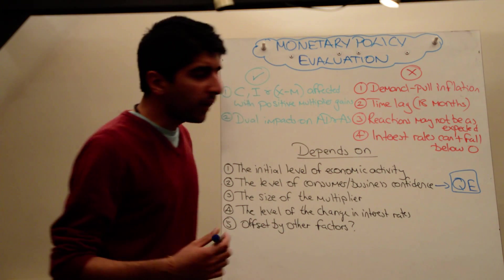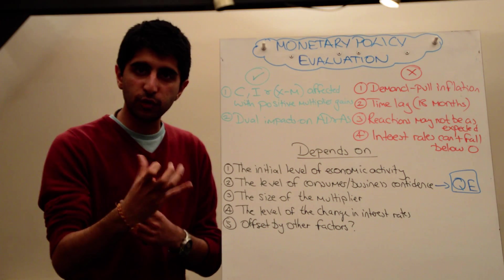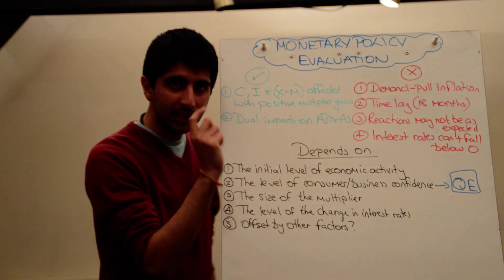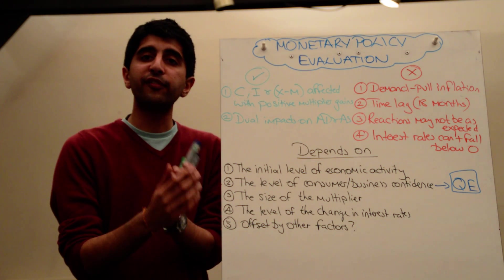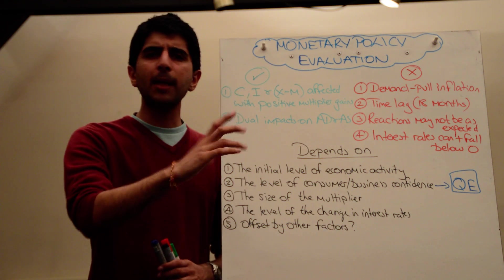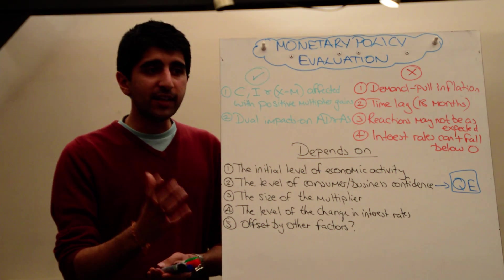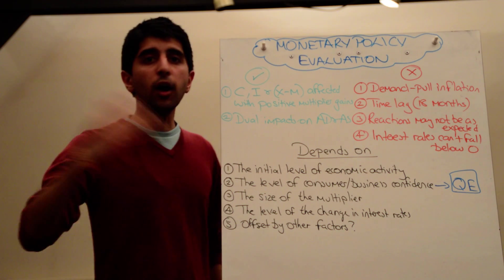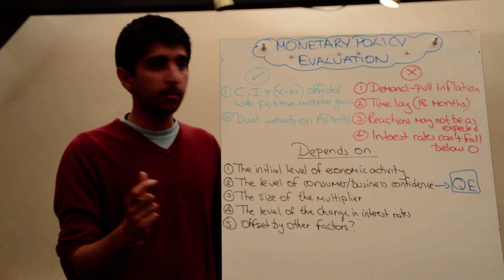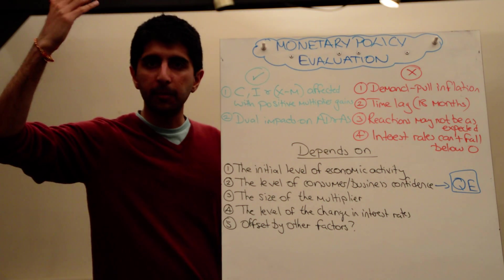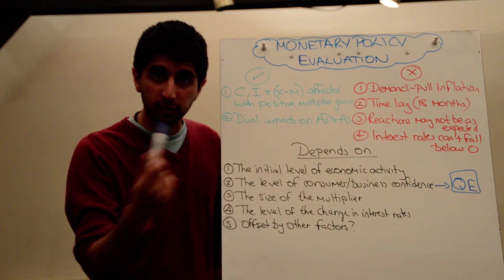And overall, whether expansionary monetary policy actually works in stimulating aggregate demand and stimulating growth and reducing unemployment, depends on number one, the key thing, the initial level of economic activity. If the initial level of economic activity is close to the full employment level of output, then an increase in aggregate demand won't necessarily increase growth. It won't necessarily reduce unemployment, because the economy is already very close to utilising all of its factors of production. Therefore, it can't produce any more. So all we're going to see is a big increase in inflation, because of the pressure on these factors of production. So that's an important factor to consider. A good diagram is needed here to explain that in an exam.